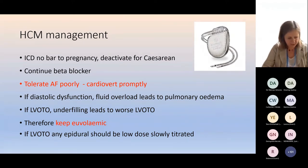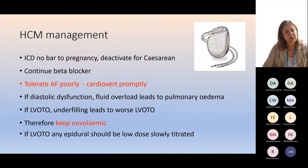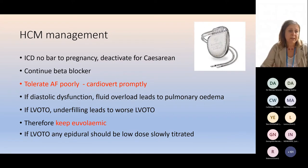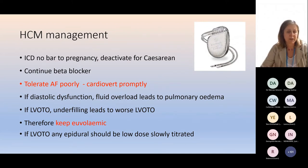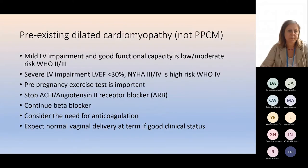It's important to remember the significance of systolic and diastolic function. If you have severe systolic dysfunction, you should advise against pregnancy. If you have severe diastolic dysfunction, the woman is very unlikely to tolerate the volume expansion of pregnancy — a significant contraindication. Severe LV outflow tract obstruction should be treated pre-pregnancy. Having an ICD is no bar to pregnancy — you just deactivate it for a caesarean if necessary. Any medication such as a beta blocker should be continued through pregnancy. Patients with HCM tolerate AF very poorly, so if somebody goes into atrial fibrillation she should be cardioverted promptly.